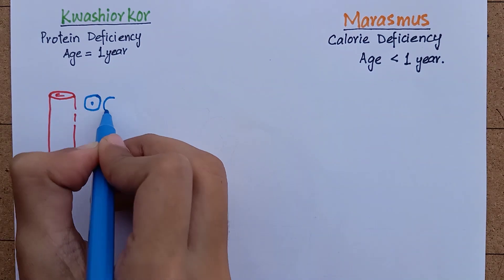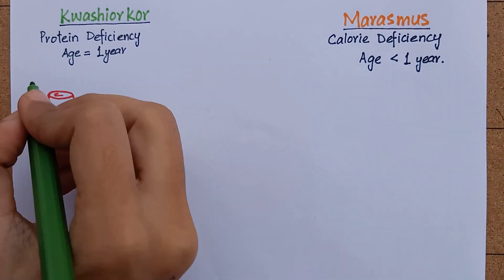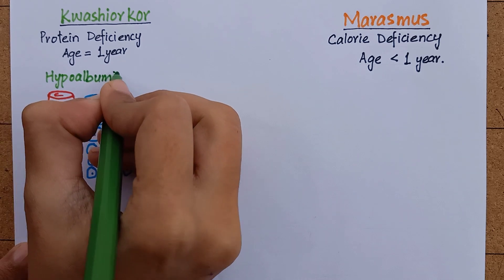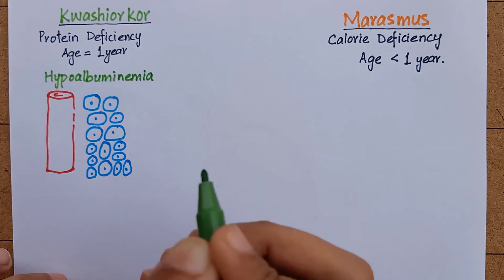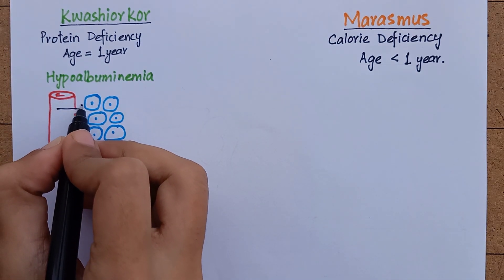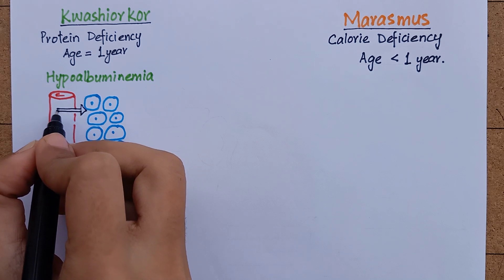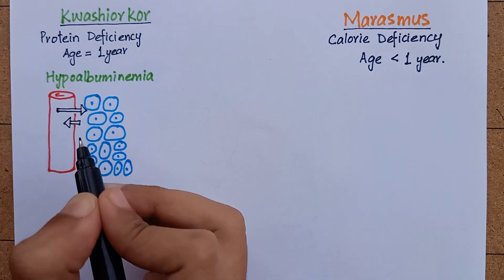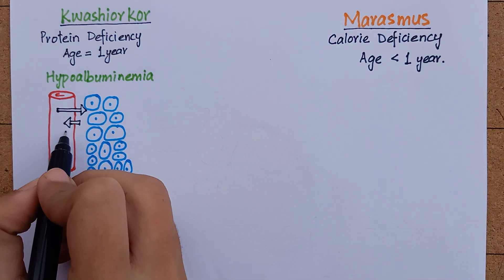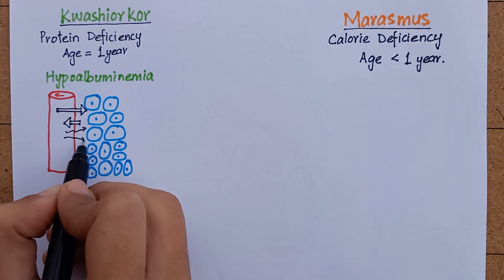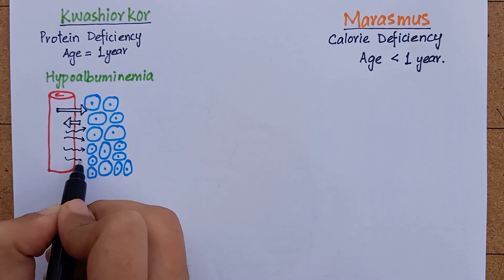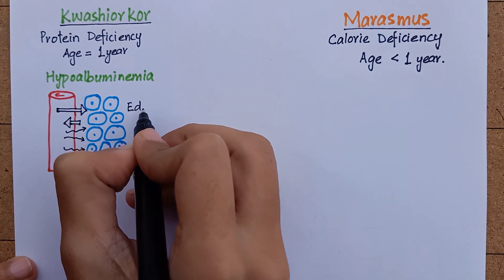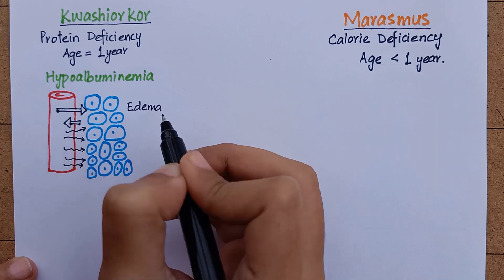Coming to the pathophysiology and clinical picture. In kwashiorkor, low levels of protein in blood — that is hypoalbuminemia — disturb the osmotic balance between plasma and interstitial fluid, causing a higher hydrostatic pressure and a lower oncotic pressure. As a result, the fluid leaves the blood vessel and collects in the tissues. This collection of fluid in tissues is called edema, which is the most significant sign of kwashiorkor.